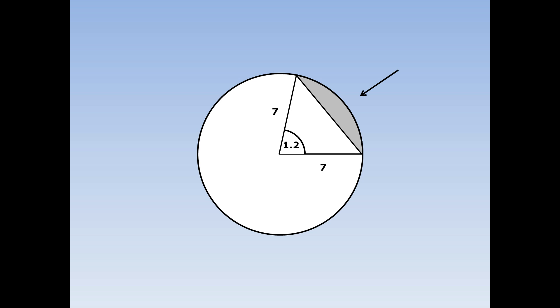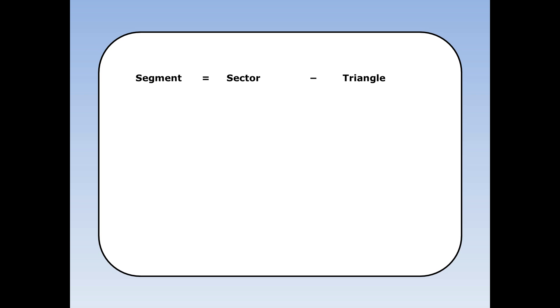Find the area of the segment of a circle with radius 7 and the angle equal to 1.2 radians. The area of the segment is the area of the sector take away the area of the triangle.